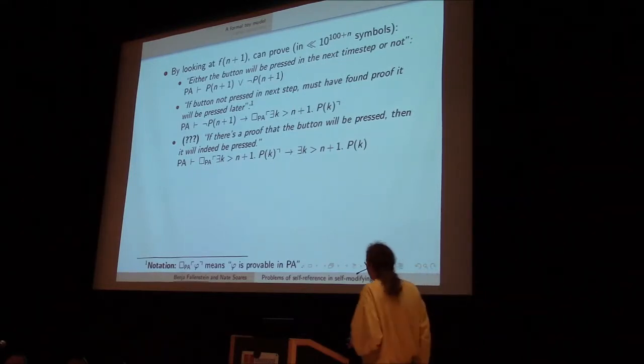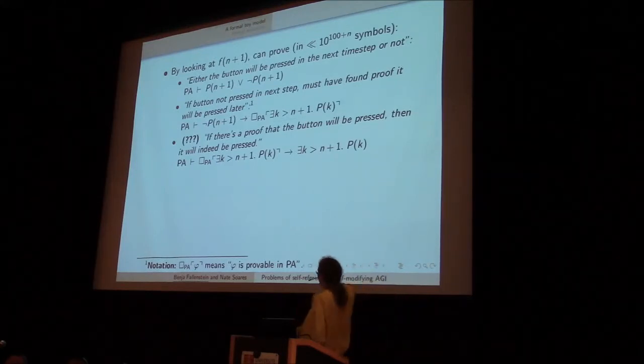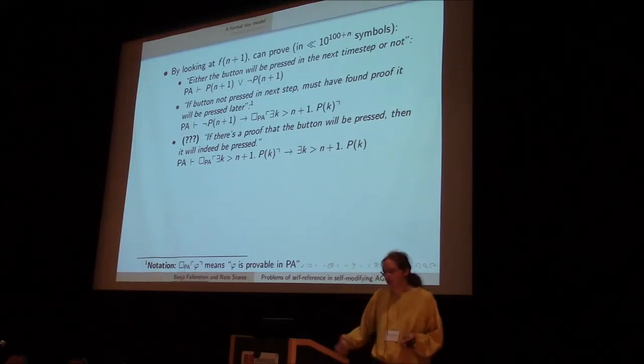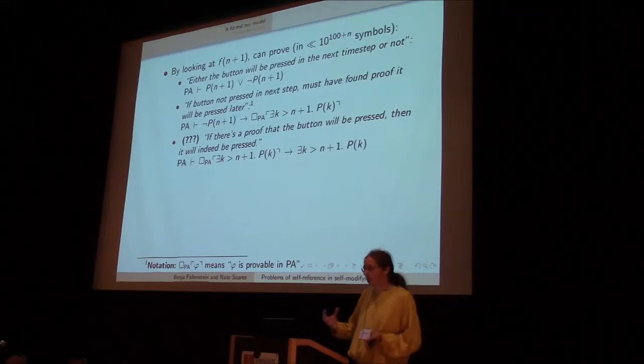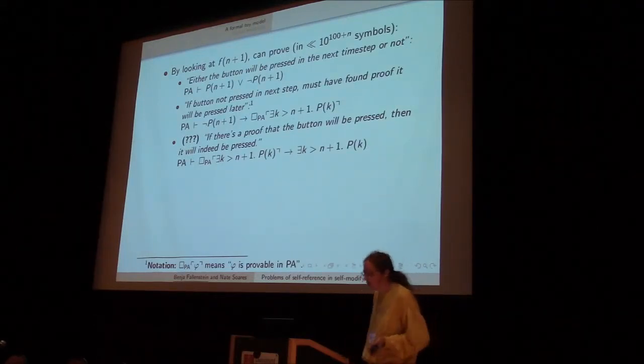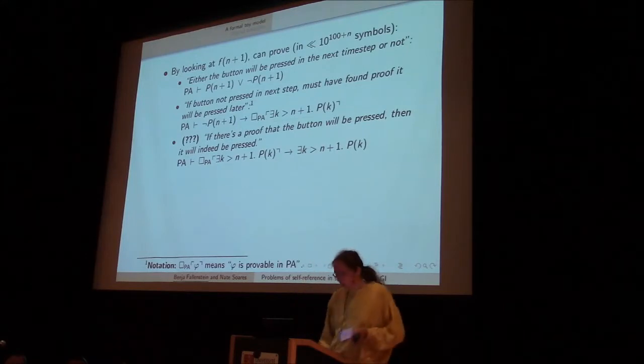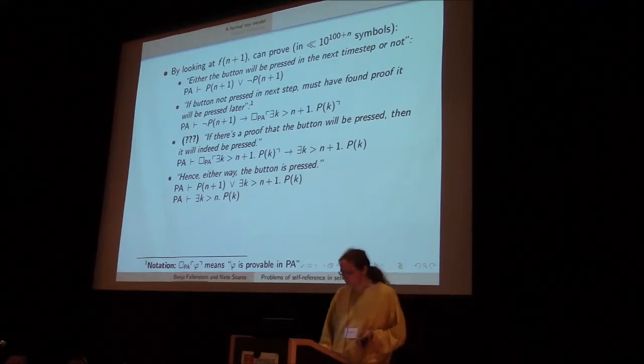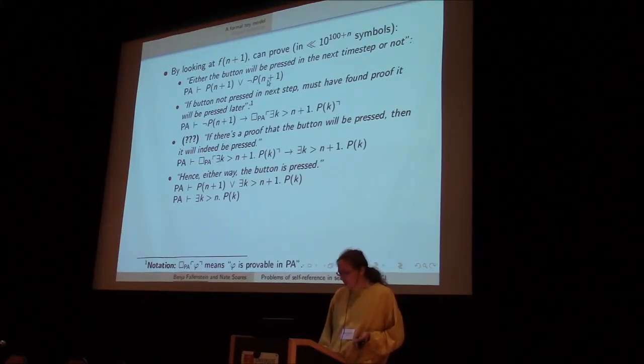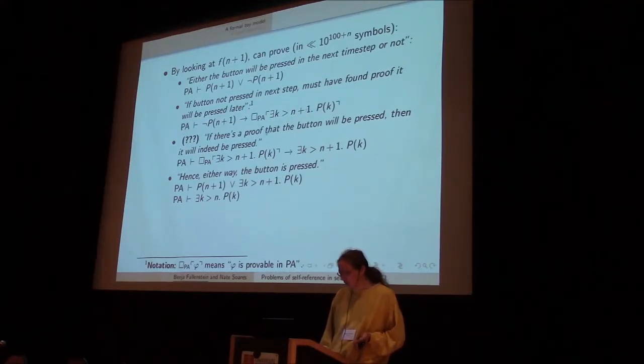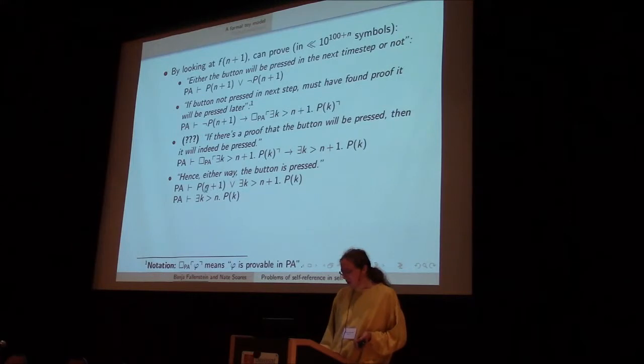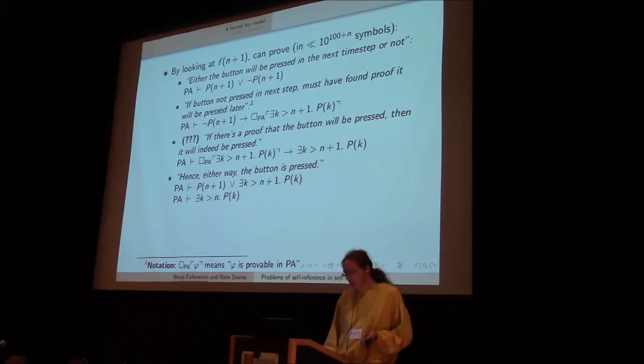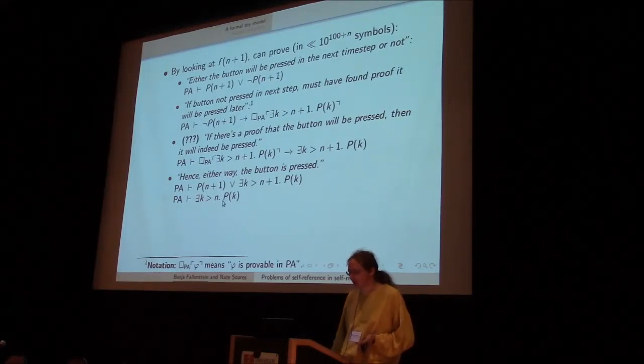And so at the bottom of the slide I have this notation, so this box sub-PA of phi means that phi is provable in PA. So up there we can look at f(n+1) and show that if it doesn't return 1, then it has found proof, so there is a proof that there is a k greater than n+1 satisfying P(k). And now comes the step which—does it work? In order for the original reasoning to go through, we would now need to go from this—there is a proof that the button will be pressed at a later time—to the button will actually be pressed at a later time, which seems pretty natural. But the question is, can PA prove this? So let's suppose that it can, and we can go on. We have P(n+1) or not P(n+1). If not P(n+1), then there is proof of this. If there is proof of this, then this is true. So in summary, either the button gets pressed in the next time step, or it gets pressed at some later time. In other words, the button gets pressed at some time step greater than n, either way.